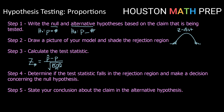We will then determine if that test statistic falls into our rejection region, and use that to make a decision concerning the null hypothesis. If it falls into the rejection region, then we will reject the null hypothesis. If it falls outside the rejection region, then we will fail to reject. Last but not least, we'll state our conclusion about the claim in the alternative hypothesis.